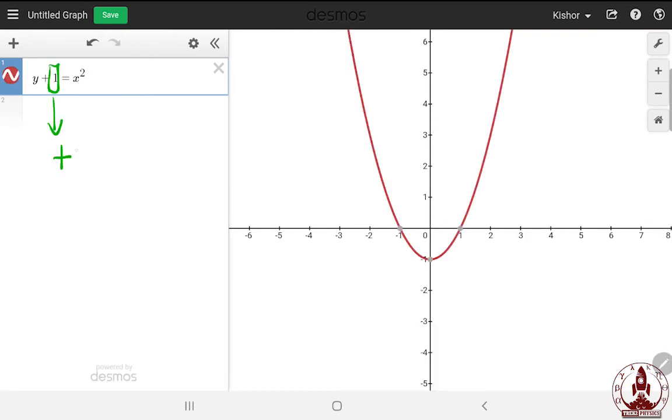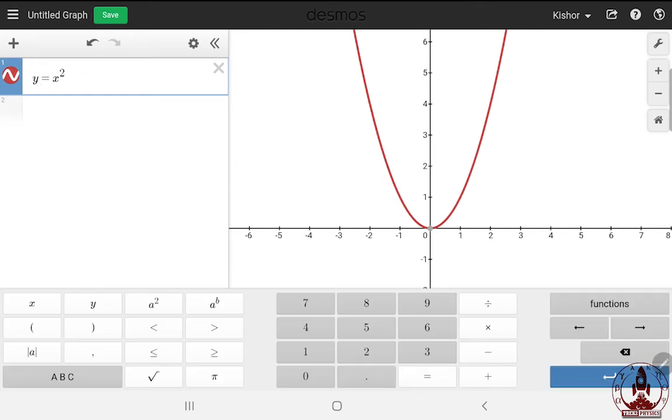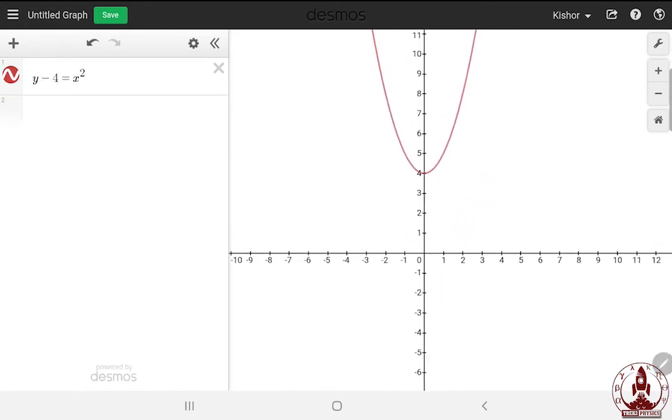Similarly, if I add 4, there you go. Let's subtract some constant. For example, 4. And according to rule, it should move up. And indeed, it moves 4 steps up.